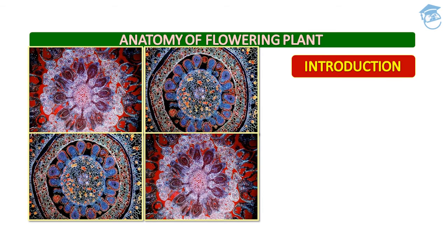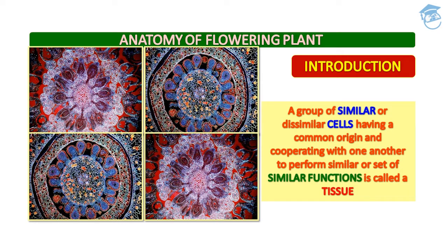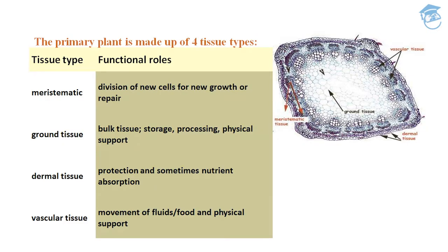Anatomically, a tissue is a group of similar or dissimilar cells that has common origin and they cooperate with one another to perform similar or a set of similar functions. That is called as tissue — an aggregate of similar or dissimilar cells that have common origin and cooperate to perform similar functions.